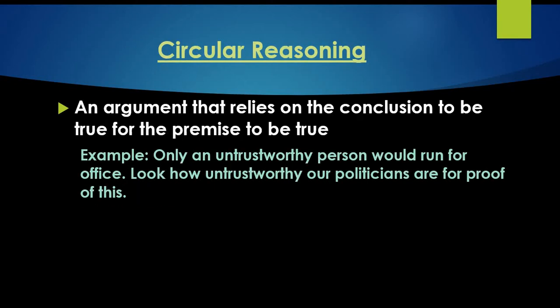Circular reasoning is an argument that relies on the conclusion to be true in order for the premise to be true — you just go around and around in a circle. For example: only an untrustworthy person would run for office. Look how untrustworthy our politicians are for proof of this. The argument assumes politicians are untrustworthy, then uses their running for office as proof of that very claim.